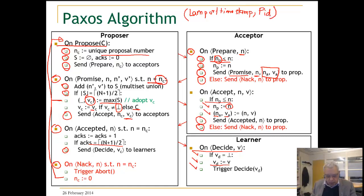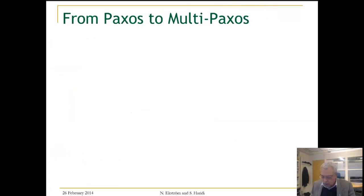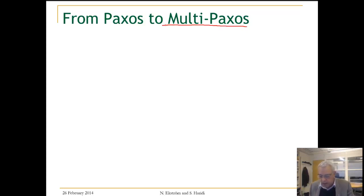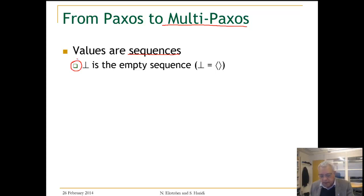Now we understand this algorithm and we move to multi-Paxos or sequence Paxos. Now we want to accept sequences and also accept multiple sequences as long as they are monotonically increasing. Let us look at the state of our multi-Paxos or sequence Paxos. Values are no longer a single value — they are sequences, and initially every acceptor accepts the empty sequence.